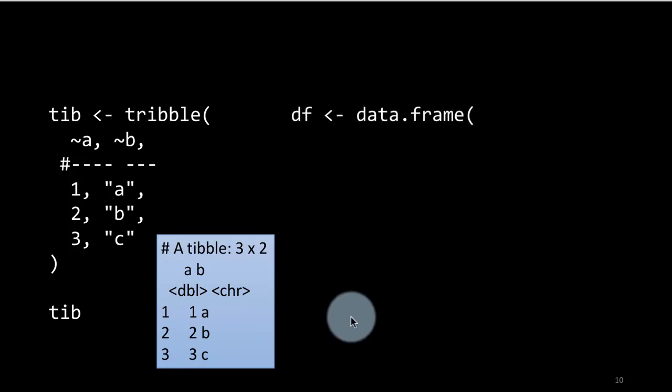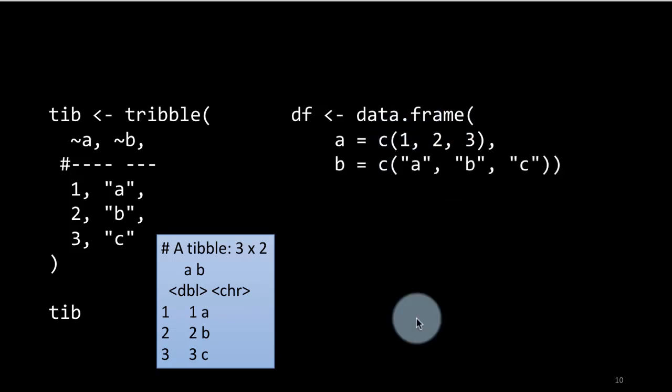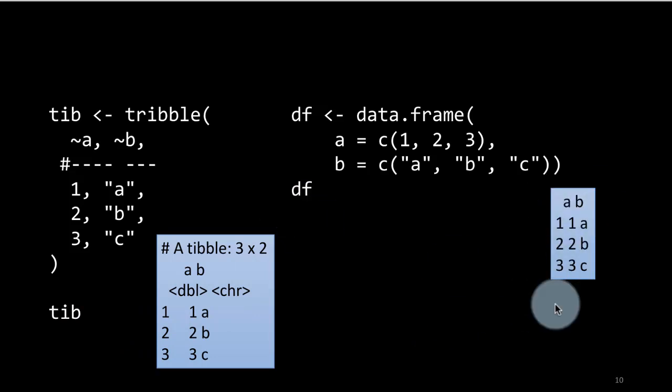Now I'm going to create a data frame with the same exact values. This time I'm using the function data.frame. And I'm saying a consists of the values 1, 2, 3. Of course, the column a has the values 1, 2, 3. Column b has the values a, b, c. Column b has the values a, b, c. So in terms of content, both of these tib and df are identical. So if you type df, this is what you're going to see, the two columns and the values in the columns. Of course, when you display a data frame, the display of the data frame doesn't tell you anything about what is the type of object contained in each column, whereas a tibble does. A little bit more useful information.